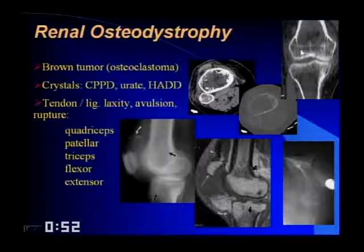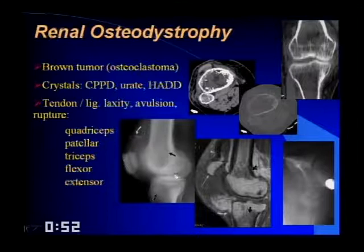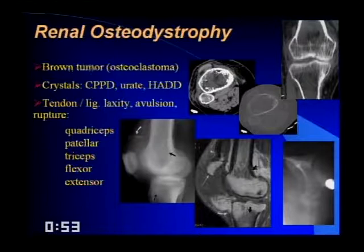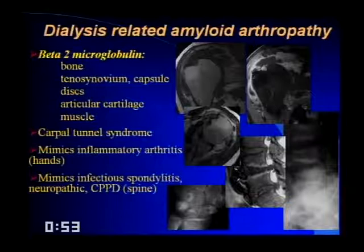Brown tumors can occur anywhere and may be mistaken for metastatic disease. In patients on long-term dialysis, deposition of beta-2 microglobulin causes dialysis-related amyloid arthropathy, which can simulate an aggressive process like neuropathic joint or infection. Amyloid deposits in joint capsules, discs, articular cartilage, bone, and muscle. Here's a man in his 30s on long-term dialysis: all the material in his shoulder is amyloid, with the rotator cuff affected as well. Pressure erosions are visible on axial images.